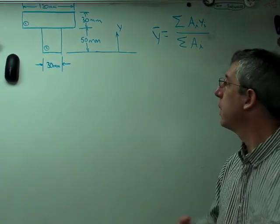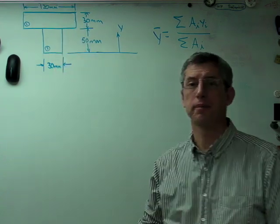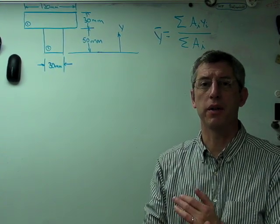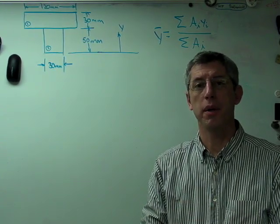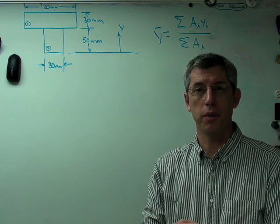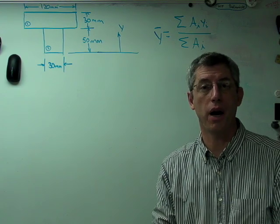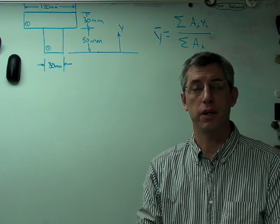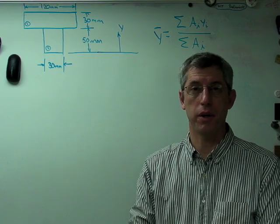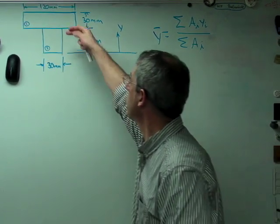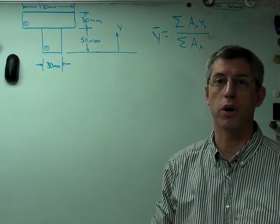As an example, I've got a T section up here. This is just something that's representative. The top section of the box is 120 millimeters wide by 30 millimeters high, and the bottom section is 50 millimeters high by 30 millimeters wide. There's a seam right there. We'll work on that later.